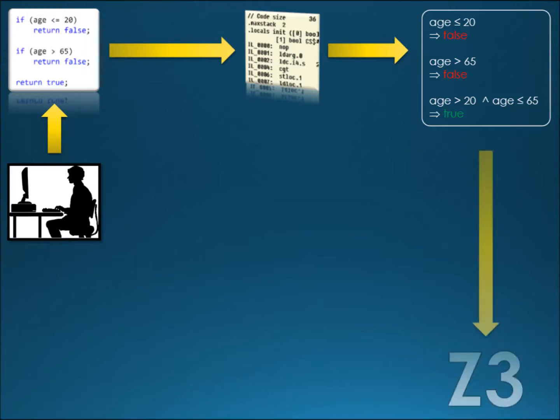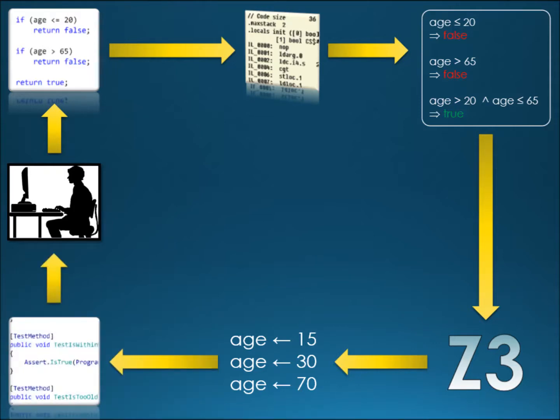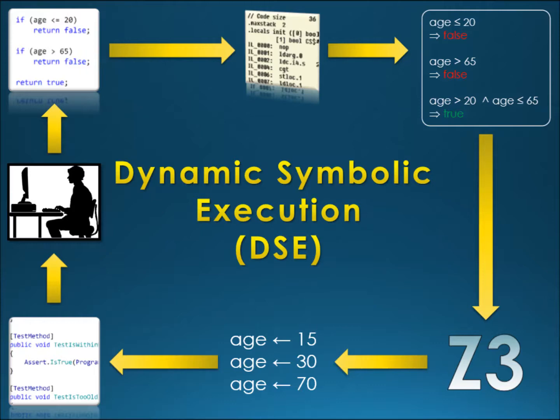Now the constraints are given to a constraint solver, like for example Z3, to obtain concrete values required to fulfill these constraints. On the example here we see three different values for each variable, each fulfilling one of the sample constraints given earlier. The variable values are then used as inputs for the method under test in the automatically generated set of unit tests, forming a test suite presented to the user. This closes the testing workflow loop with automatic test generation using a DSE engine.